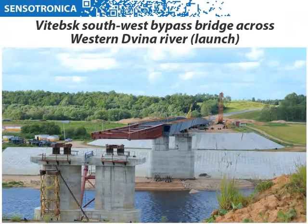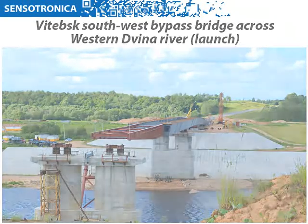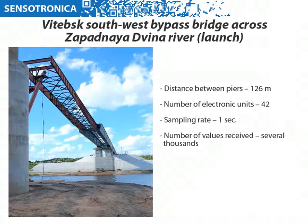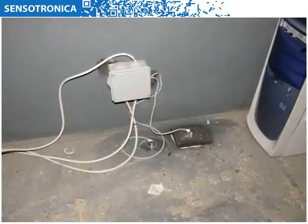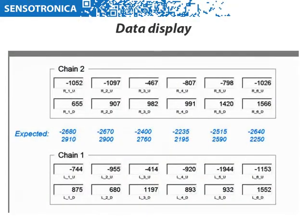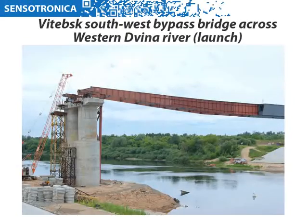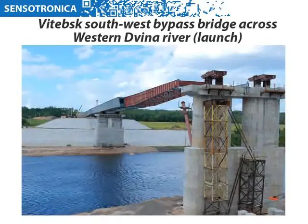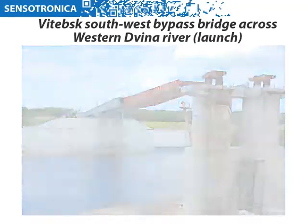Let's see the technology in use. Vitivsk Southwest Bypass Bridge across the western Dvina River: distance between piers — 126 meters; number of electronic units — 42; sampling rate — 1 second; number of values received — several thousands. The Vitivsk Bypass Bridge across the western Dvina River was successfully launched. No excessive mechanical stress release was observed.